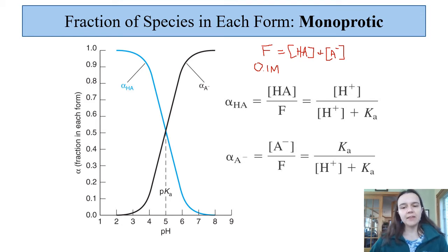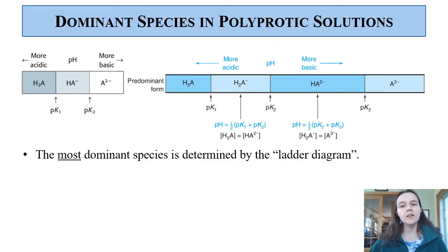You can make some substitutions, and you can also find that HA over F is equal to H+ over H+ plus Ka. The fraction in A- is the A- concentration over the formal concentration, and that's going to be Ka over H+ plus Ka. That's interesting, that is our examples in monoprotic acid-base, but this lesson is about polyprotic acid-base.